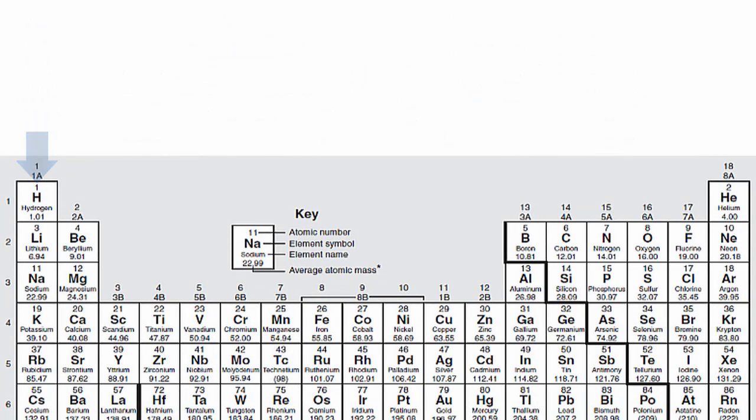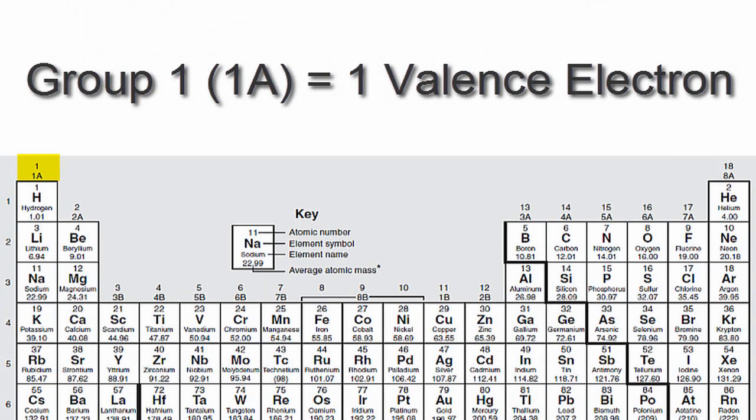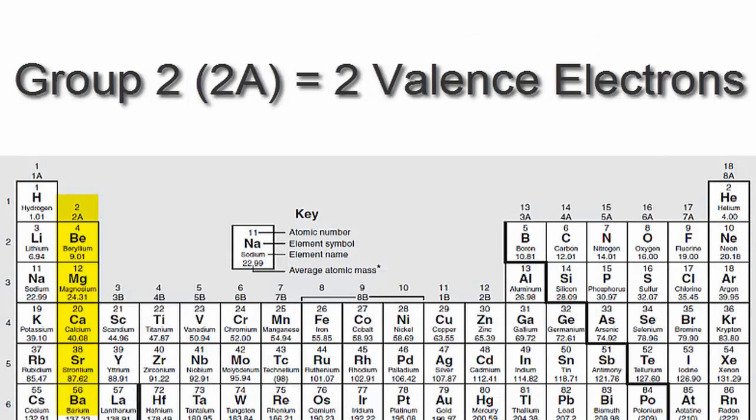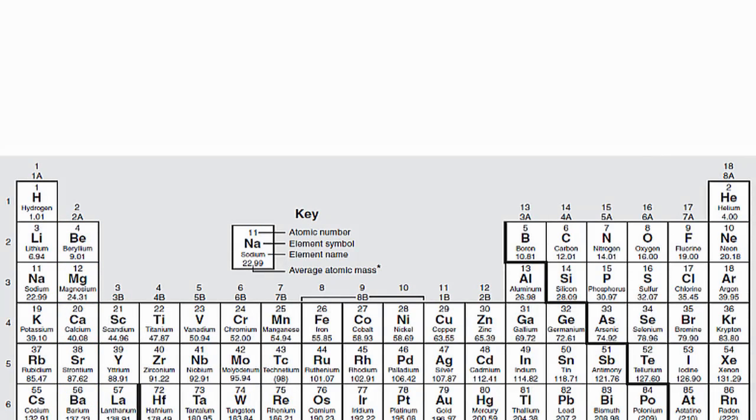For example, hydrogen has one valence electron because it's in group 1, sometimes called 1A. If you look at group 2 or 2A, you'll see that those elements have two valence electrons. We'll skip over the transition metals, since they're a bit more complicated and probably don't apply to you.